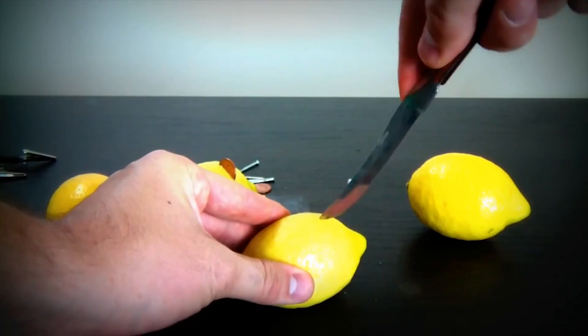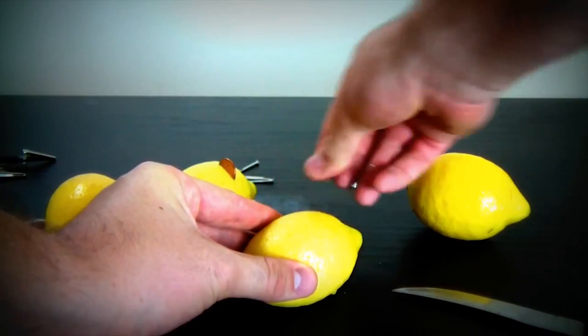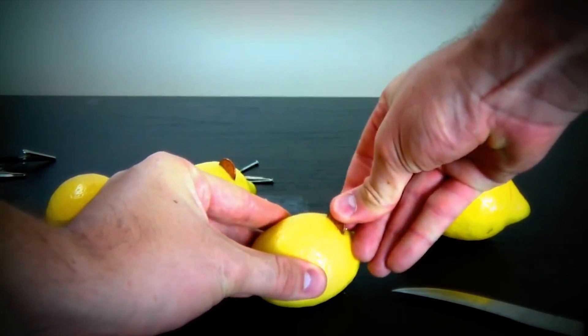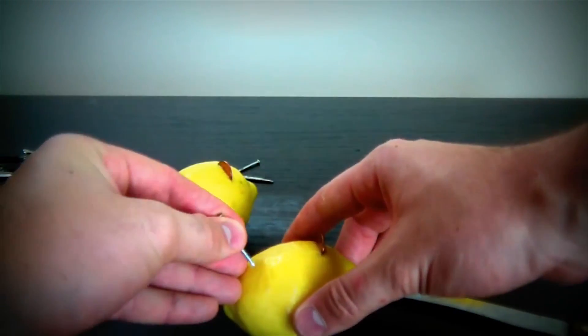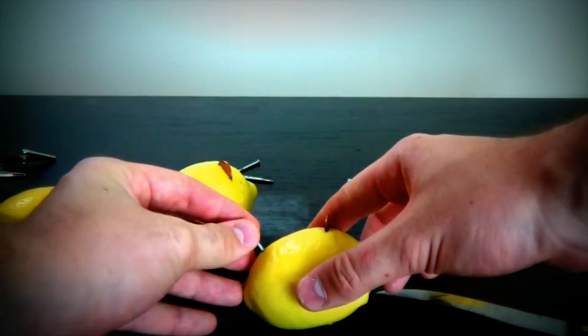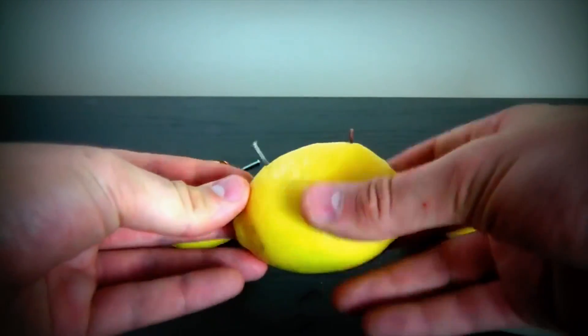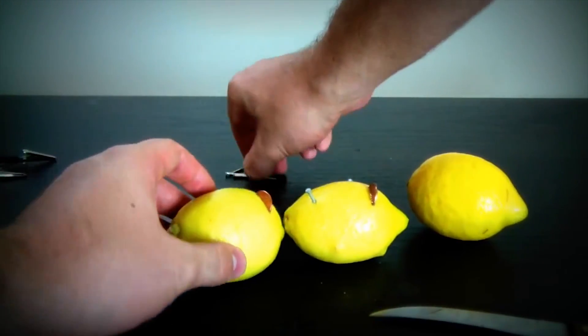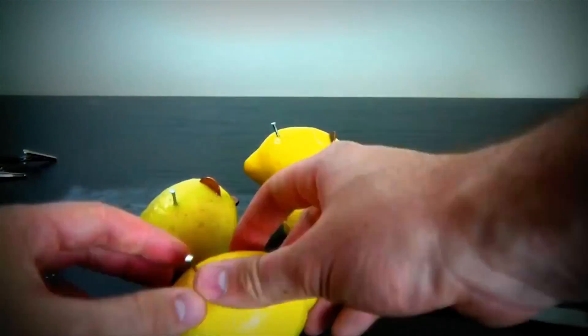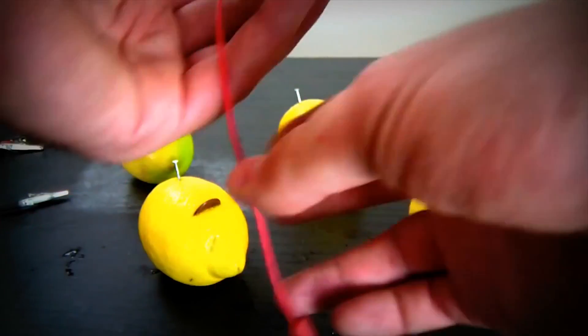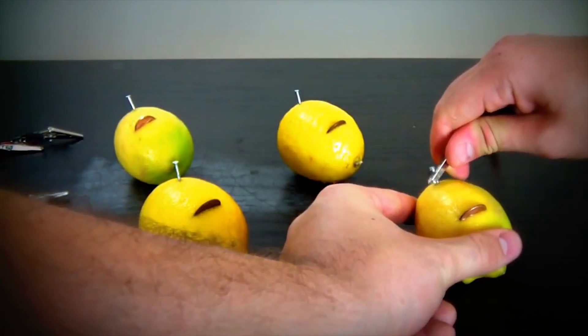So first we're gonna get our knife and make a hole like that. And then we're gonna take our coin and stick it in there like halfway. And second you're gonna stick a nail on the other side like that. As you can see, we're gonna do it on every lemon.